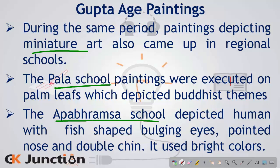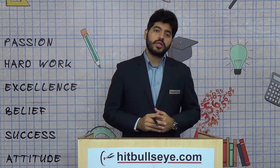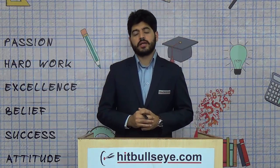In the Pala school, paintings were executed on palm leaves and depicted Buddhist themes. In the Appabhramsha school, paintings depicted human beings in a distinctive manner — fish-shaped bulging eyes, a pointed nose, and a double chin — and made use of brighter colours.